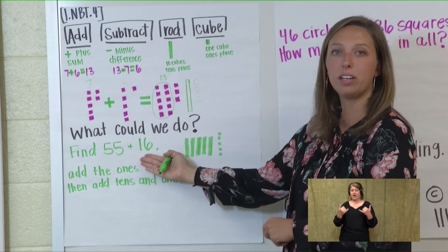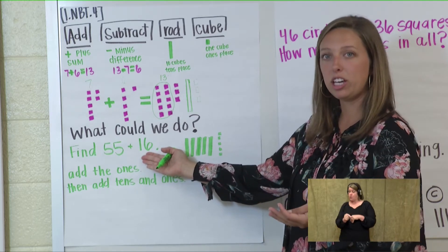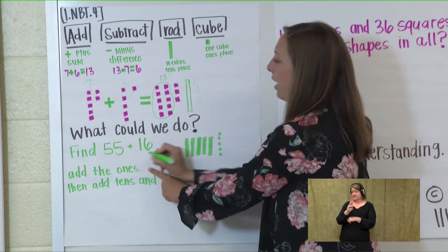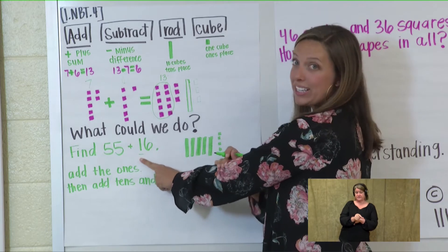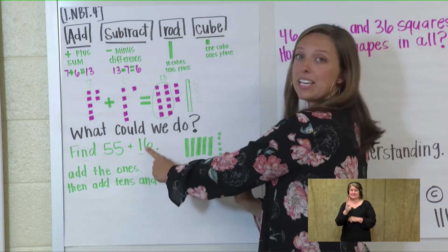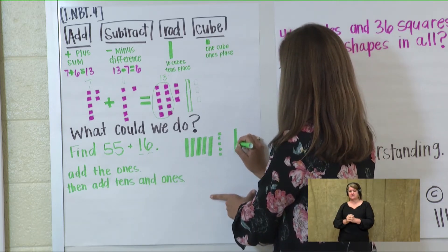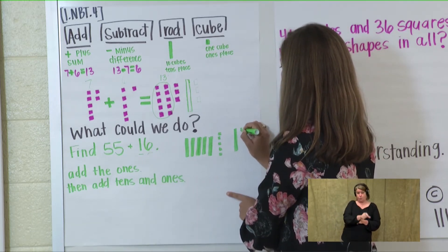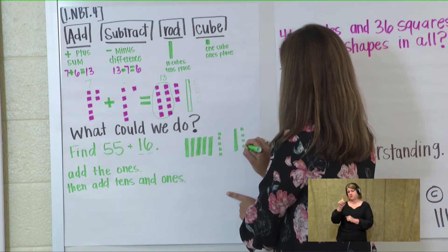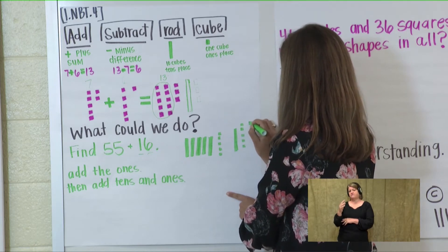Now we have the number 16. How many rods and how many cubes? For 16, I'm going to have 1 rod because there's a 1 in the tens place, and 6 cubes because there's a 6 in the ones place. One rod and 6 cubes: 1, 2, 3, 4, 5, 6.